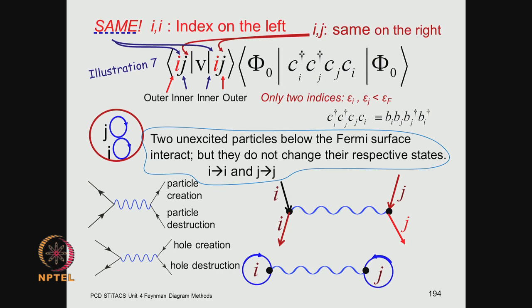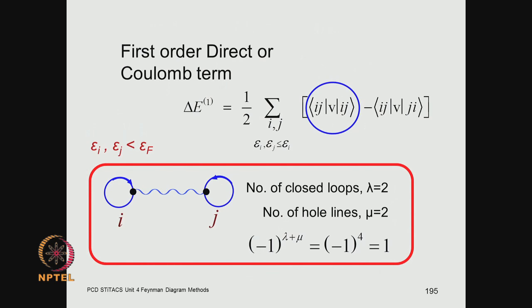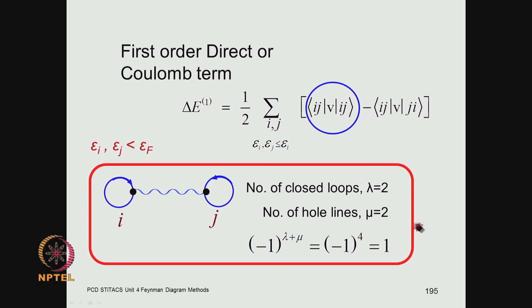In the first order diagram — the direct term — you have the double bubble, which we discussed earlier. In this double bubble, if you count the number of closed loops, you have 2, and the number of hole lines is also 2. If you take the contribution of lambda and mu together, you get a phase factor of minus 1 to the power lambda plus mu, which in this case equals plus 1. So this diagram contributes a plus 1 sign to the first order correction.